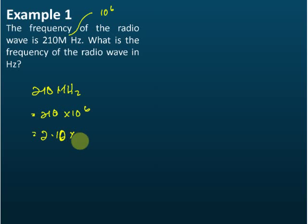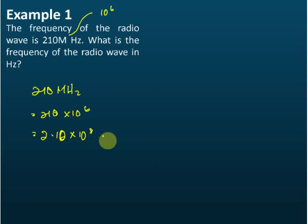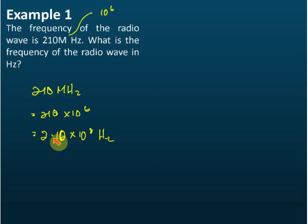In standard form, this is 2.10 times 10 to the power of 8 hertz. Note that 210 times 10 to the power of 6 is not standard form, because in standard form the real number must be between 1 and 10. Since 210 is not in that range, we must convert it to 2.10, giving three significant figures.